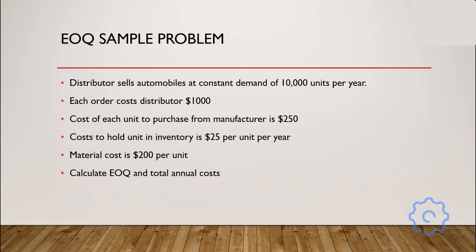We have a distributor that sells items at a constant demand of 10,000 units per year — that's how many units per year they sell. With EOQ, we normally work with yearly numbers, and everything in the equation must use the same unit. Each order costs the distributor $1,000 to place. The cost of each unit to purchase from the manufacturer is $250. The cost of holding a unit in inventory is $25 per unit per year — this is the cost to store it in inventory.